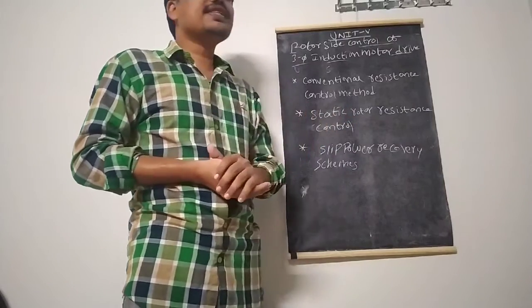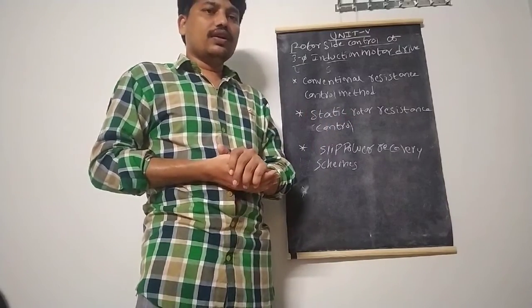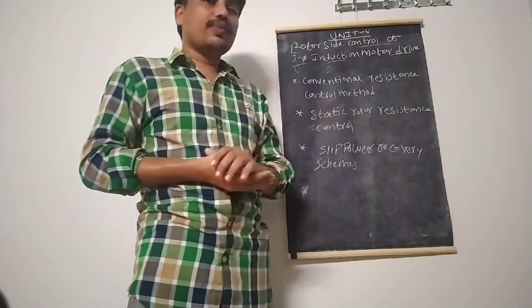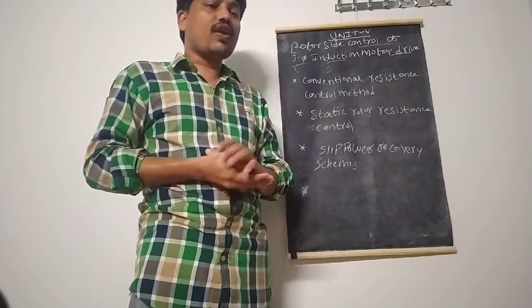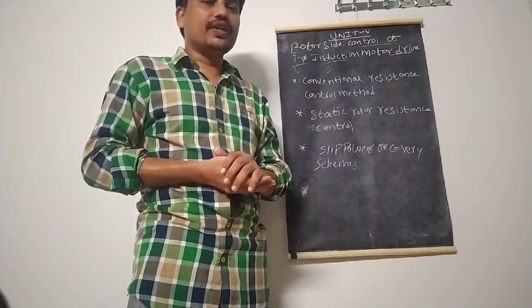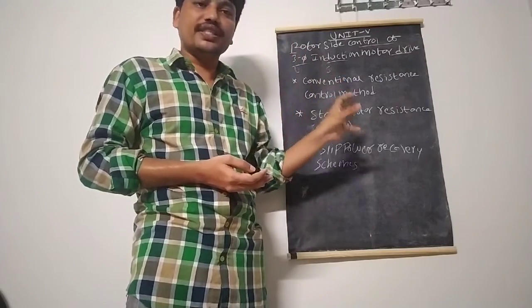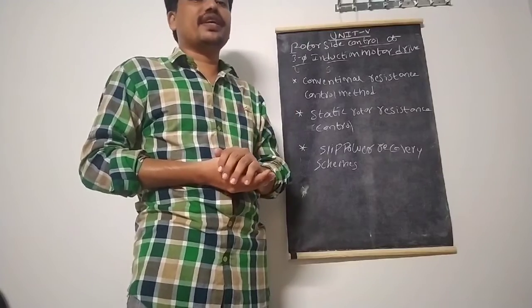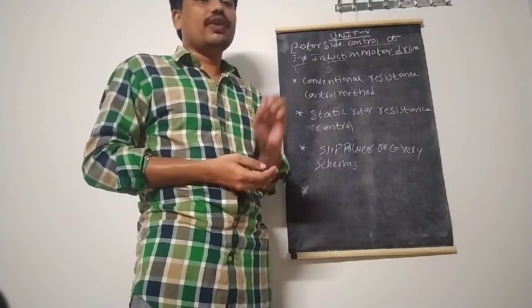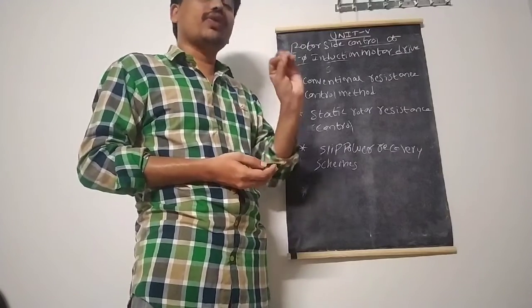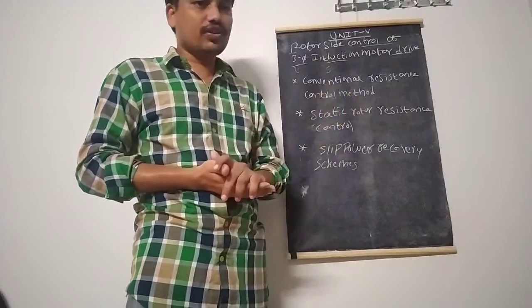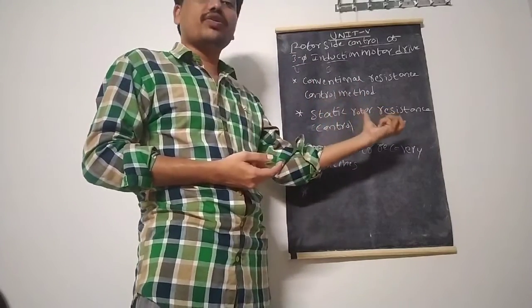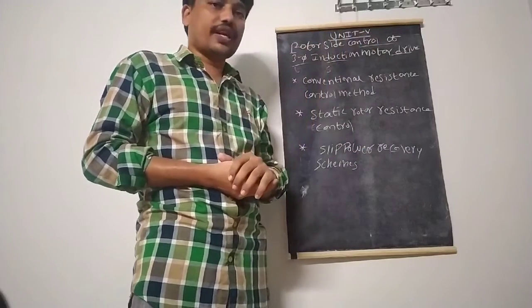The next method is the static rotor resistance control method. In this method, we do not control the resistance manually; instead, we control the static rotor resistance with the help of power electronic semiconductor devices — especially choppers. This is why in some textbooks it is referred to as the chopper resistance control method for induction motor drives.